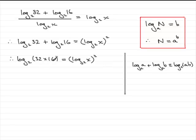Now, what have we got here? Well, if you were to multiply 32 with 16, what you're going to get is log₂(512). And that's equal to (log₂(x))².